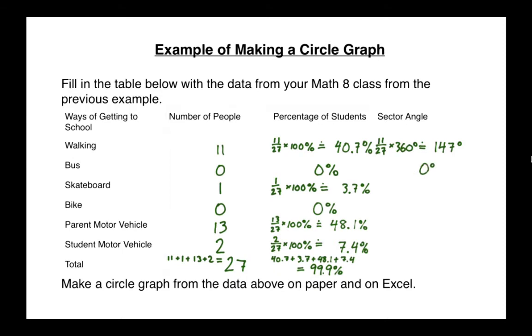We don't really need to do a calculation for number of people who take the bus. There's zero people who take the bus so it's a zero degree angle for that category. In fact I'm just going to leave it off the circle graph. Skateboard, there's only one person out of 27 so I do 1 divided by 27 multiplied by 360 degrees. The size of the angle for that sector is going to be 13 degrees. Again zero degrees for the bike, and for the parent motor vehicle the angle is going to be 173 degrees and for the student motor vehicle it's going to be 27 degrees. Now at this point if I add up all the angles they should add up to 360, so I'm going to just do a quick check. I'm going to add all these angles and they work out to exactly 360 degrees so I know I'm in good shape here.